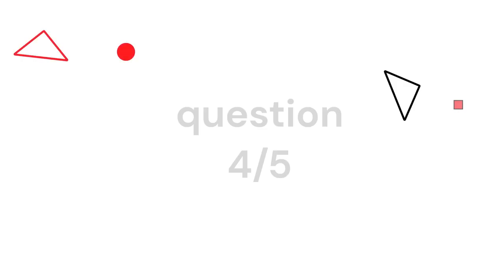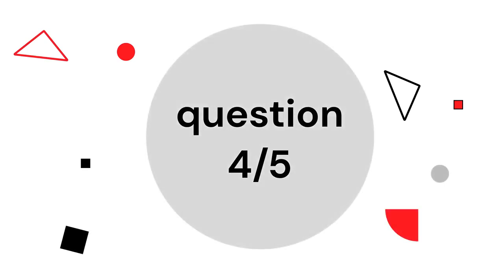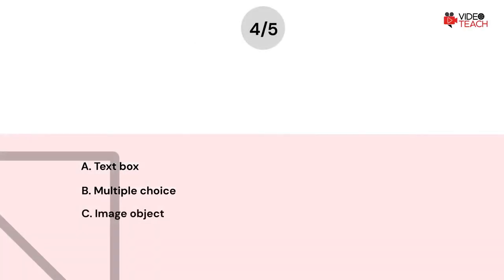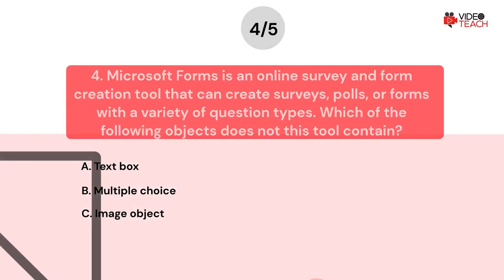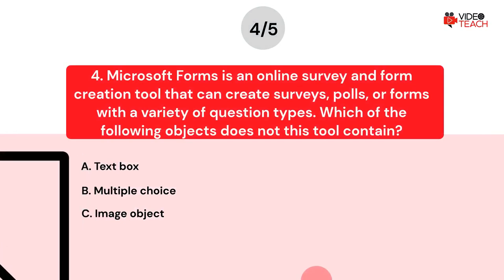Question number four. Microsoft Forms is an online survey and form creation tool that can create surveys, polls, or forms with a variety of question types. Which of the following objects does this tool NOT contain? Option A: Text Box. Option B: Multiple Choice. Option C: Image Object.